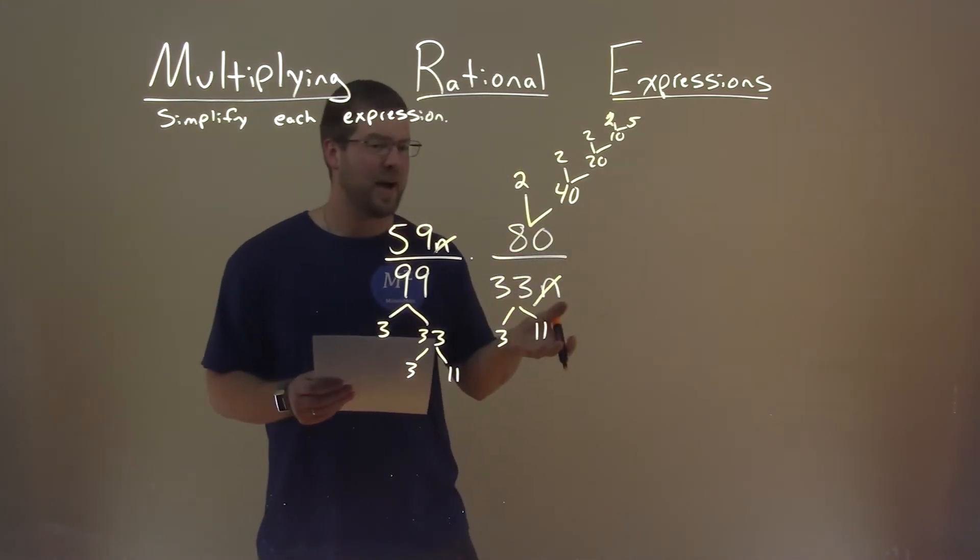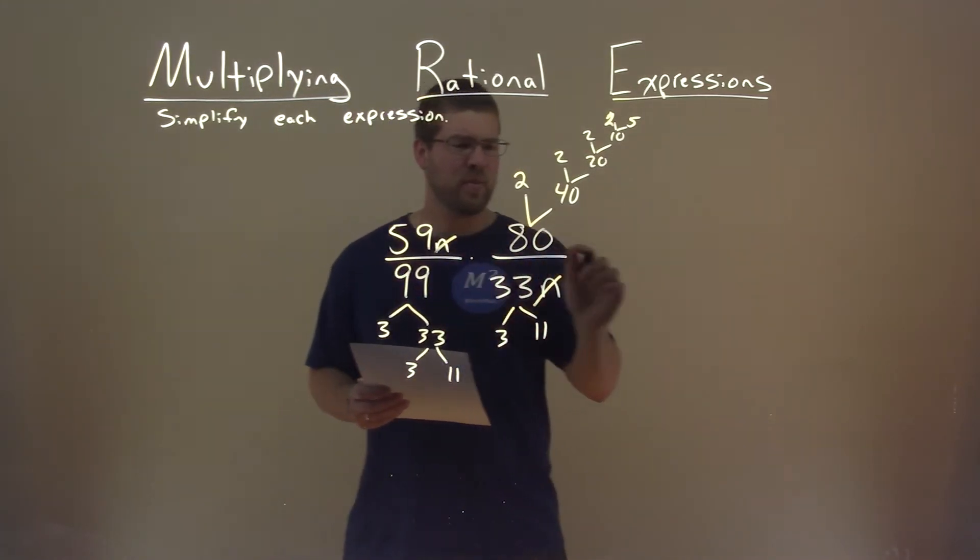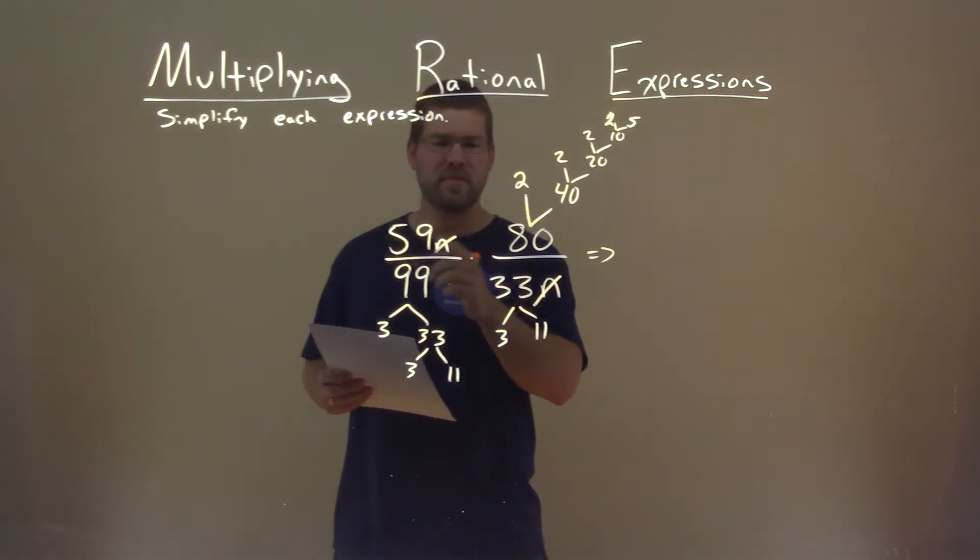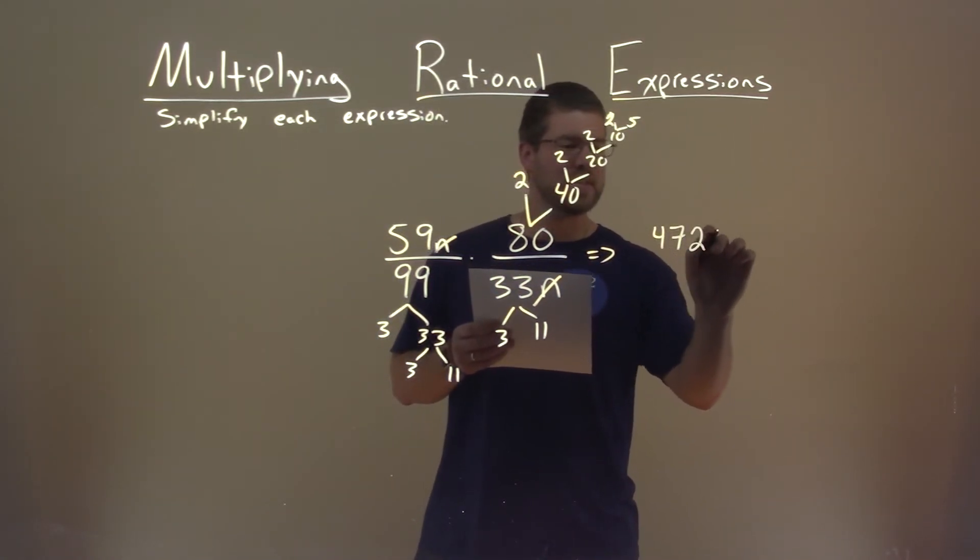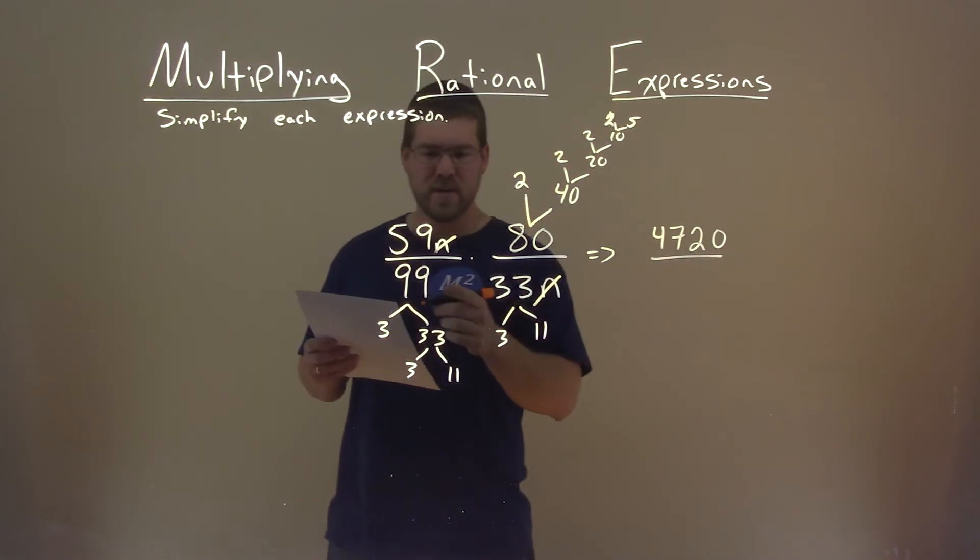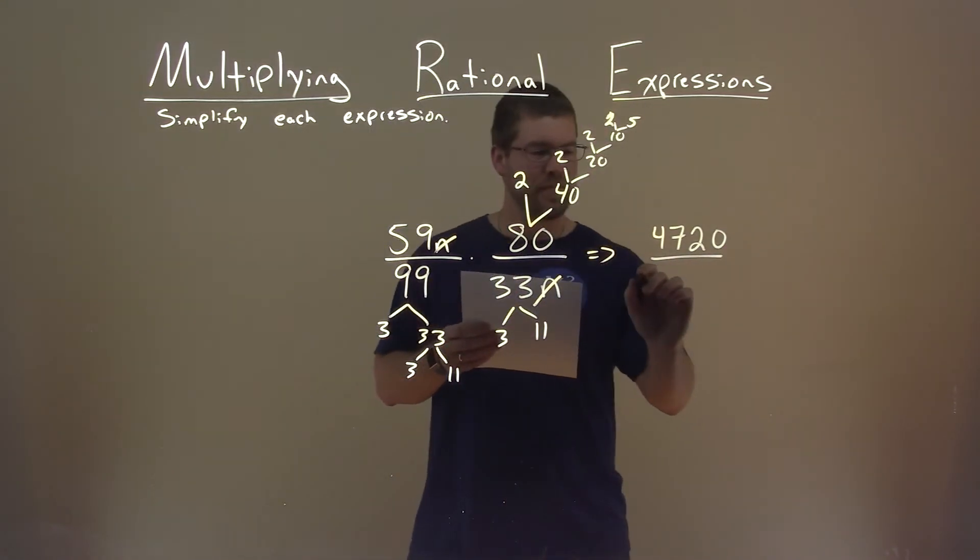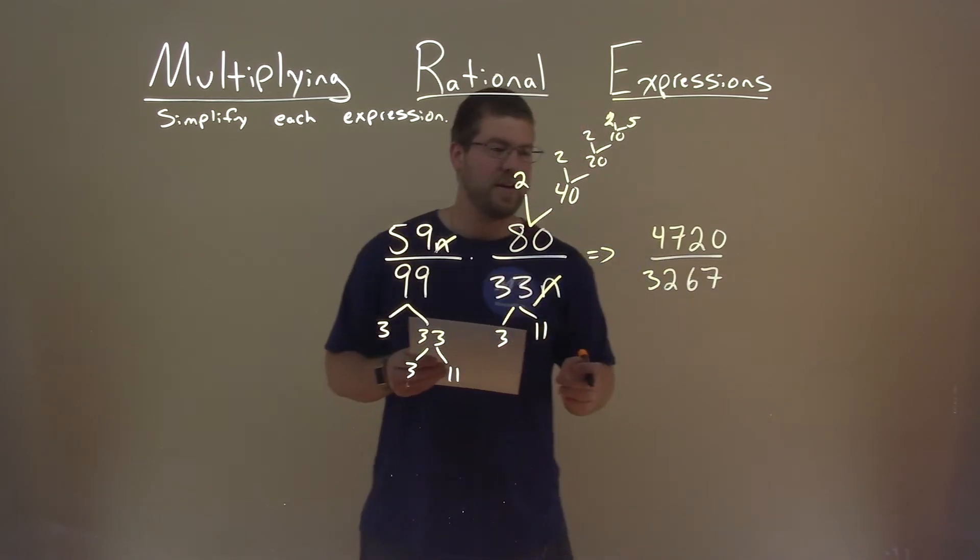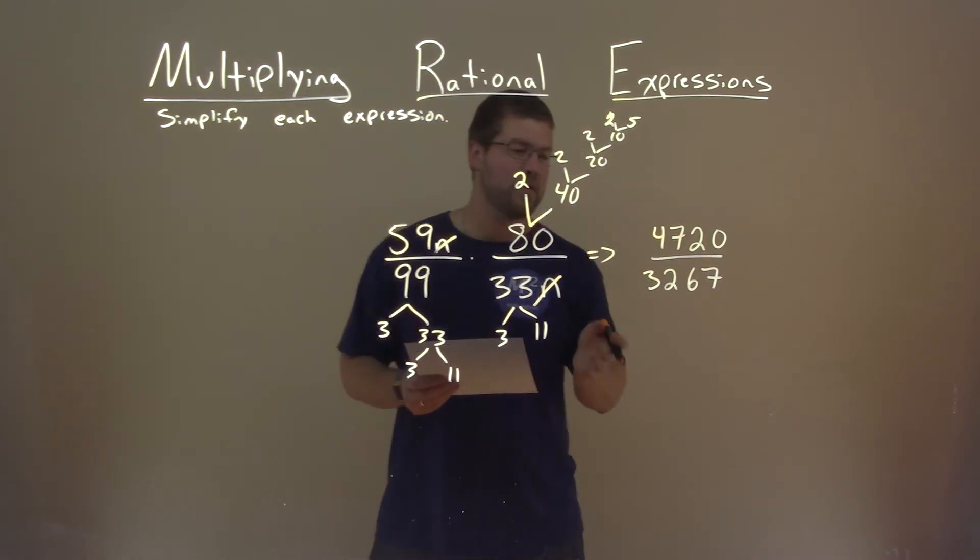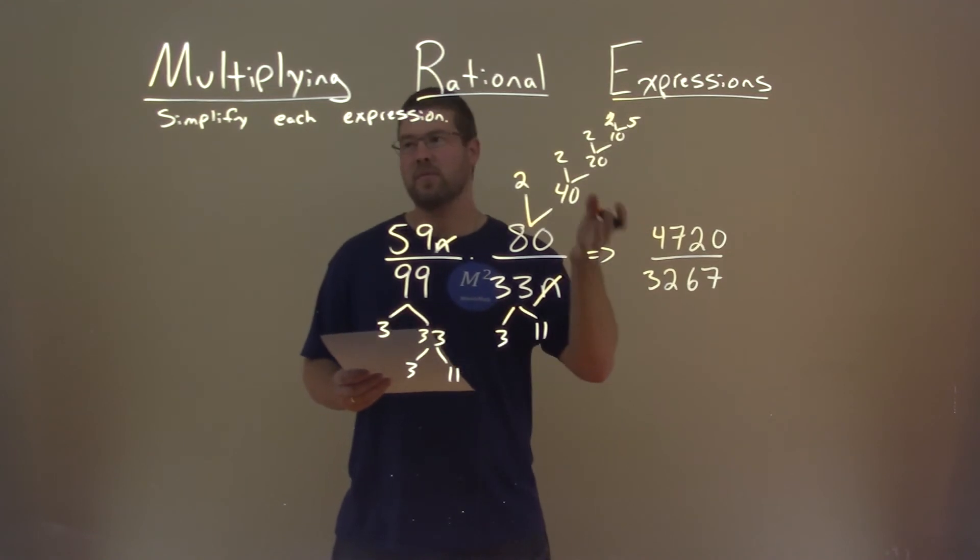So I broke it down, didn't really find anything, so now I just have to multiply across. 59 times 80 is 4,720, over 99 times 33, 3,267. And that's actually it. It's really large, but that is our answer in simplified form.